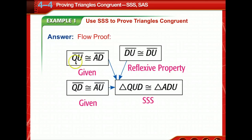QU is congruent to AD. That's given. So there's a side. QD is congruent to AU. That's given. There's another side. So you've got a side, another side. If you know that you can prove side-side-side by just figuring out what that third side is, and it's by reflexive property, then you can draw your arrow. That proves this congruent statement. By side-side-side, triangle QUD is congruent to triangle ADU.